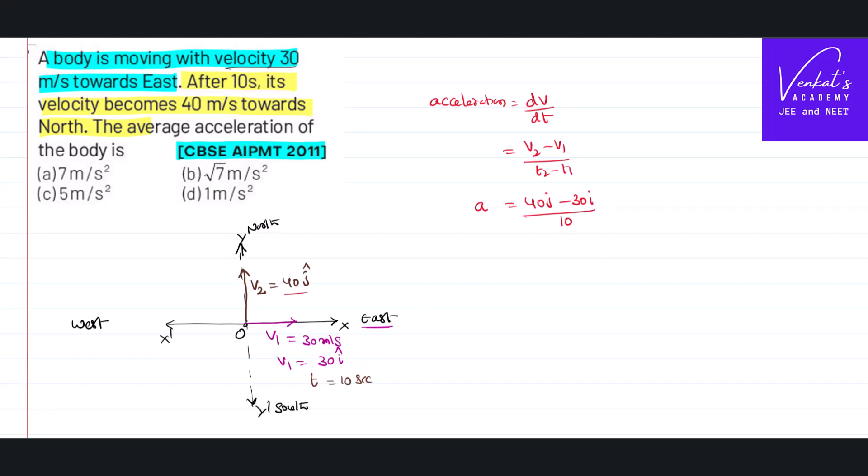But you don't want the answer in that format, in a vector format. Rather you want it in magnitude. So how can I find the magnitude of that vector? Root of x component squared plus y component squared. That is root of 40 squared is 1600, 30 squared is 900, by 10.